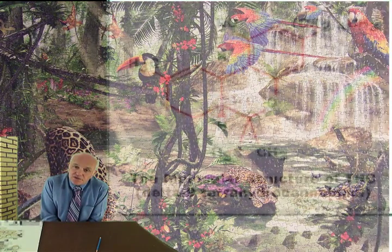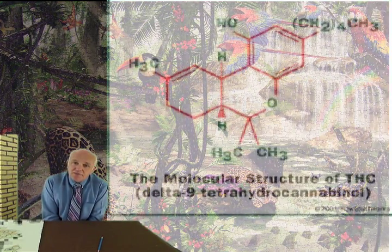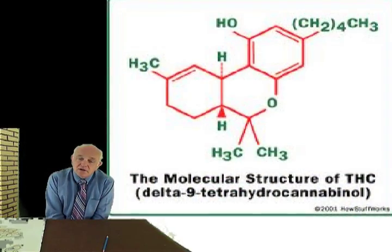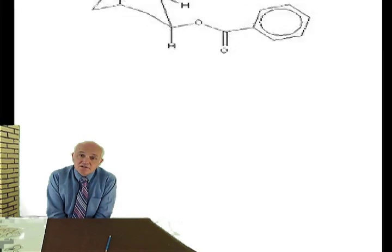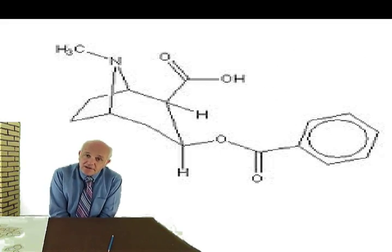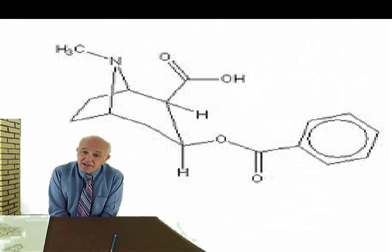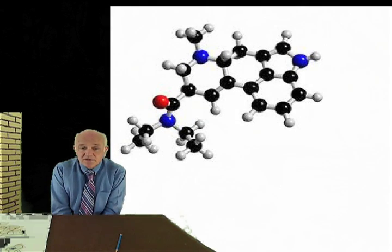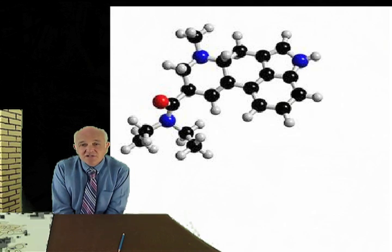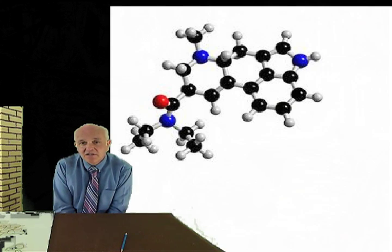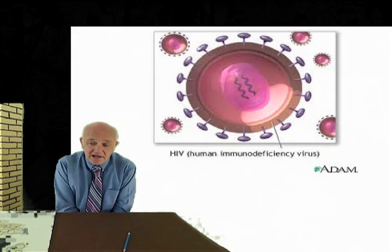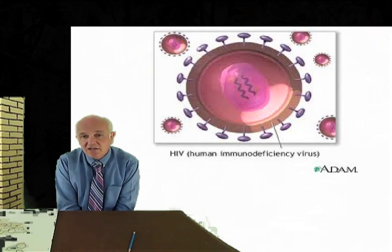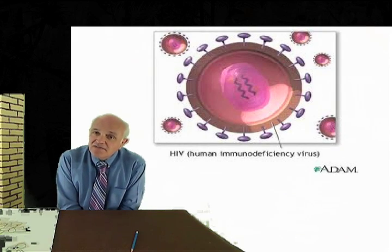How would you analyze for something like this? This is tetrahydrocannabinol. Or how about something like this? The primary metabolite of cocaine is benzylecgonine. This is benzylecgonine. Or how about this one? This is lysergic acid diethylamide, LSD. Or this is a little bit out of the realm of what we think of as analytical chemistry, but it's a very important one. How would you analyze for this? This is the HIV virus.